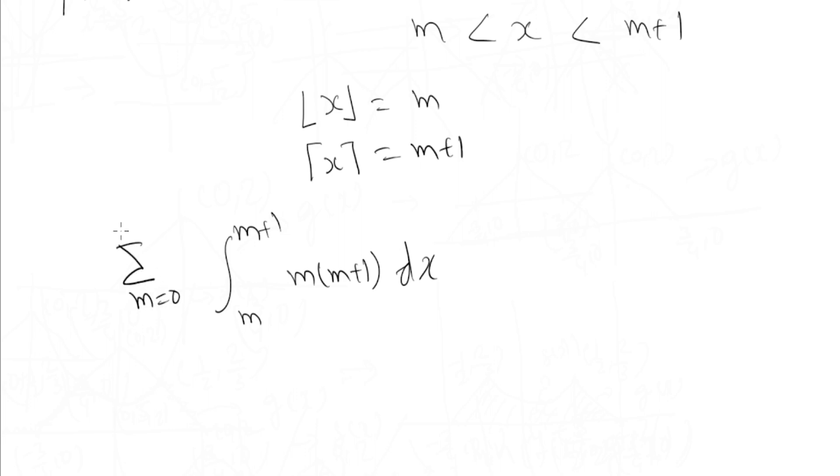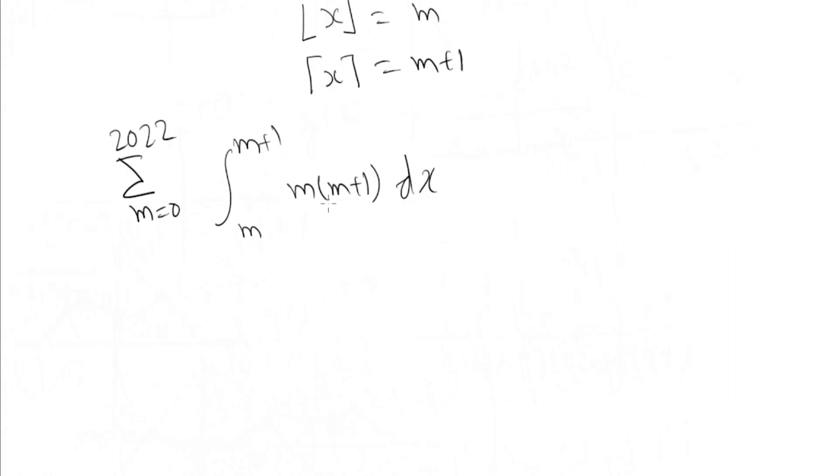m times (m+1) is independent of x, so we can take it out of the integral and we are left with the summation of (m+1) and m squared.